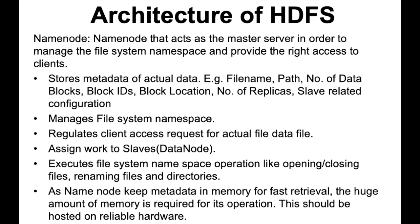The name node stores metadata of actual data — actual data means file name, path, number of data blocks, block IDs, block location, number of replicas, and slave configurations. It manages the file system namespace and regulates client access requests for actual file data. The name node arranges all the client access paths between client and server, and its main responsibility is to assign work to slaves, which are the data nodes.